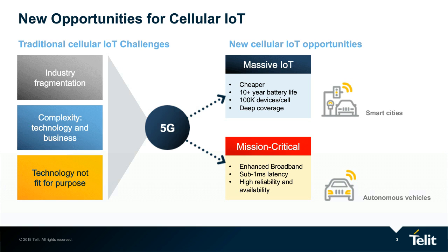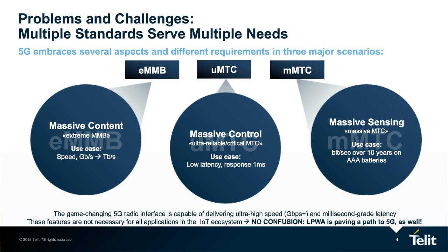5G will enable critical machine-type communication use cases such as autonomous vehicles, cellular connected drones, or real-time healthcare. But there are multiple challenges — one of today's major challenges is that the technology often does not fit for purpose. 5G will embrace several aspects in three major scenarios captured in this graph: massive content related to high speed and gigabit — the enhanced mobile broadband; UMTC for ultra-reliable MTC applications with sub-millisecond latency; and massive sensing, which is the massive IoT — lots of battery-powered, very low cost and low power consumption devices.